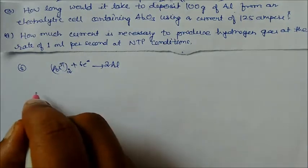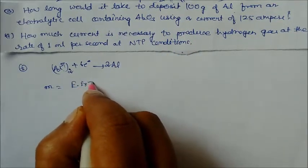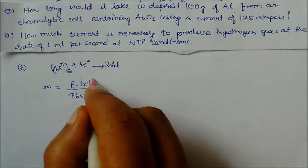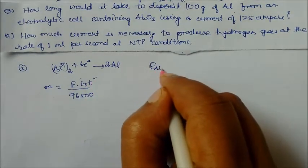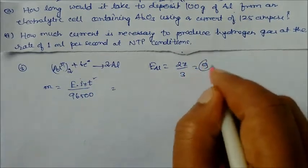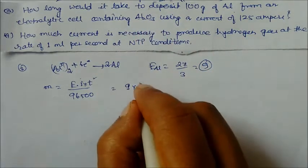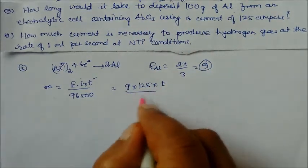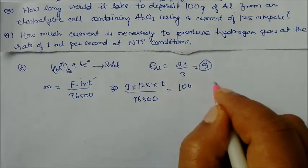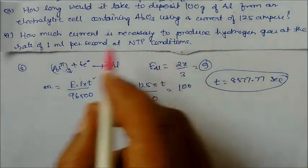We apply Faraday's law: mass deposited = (E × i × t) / 96500. The equivalent mass of aluminium = molar mass / 3 = 27/3 = 9. So: 100 = (9 × 125 × t) / 96500. Solving for t gives 8577.77 seconds. This is the time it takes to deposit 100 g of aluminium at the electrode.